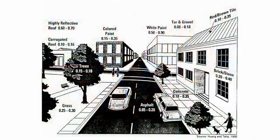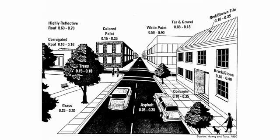But what kind of radiation is this? It can be radiation in different ranges: visible, infrared, and ultraviolet. Accordingly, albedo will be determined for each and every range — for example, the characteristics of reflection properties of infrared rays specifically.